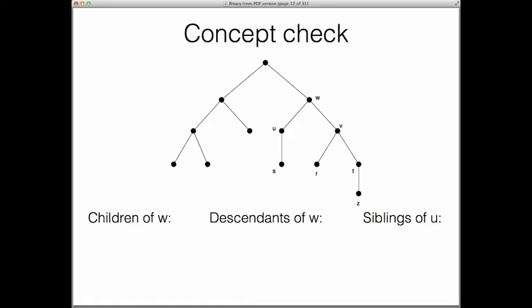So in this new tree the children of W are the vertices U and V. They are both children of the same parent so that also makes them siblings just like in real life children of the same parent would be siblings. The descendants of W include all the children of W and all the grandchildren of W and all the others that are below it. So that would be U, V, S, R, T, and Z.